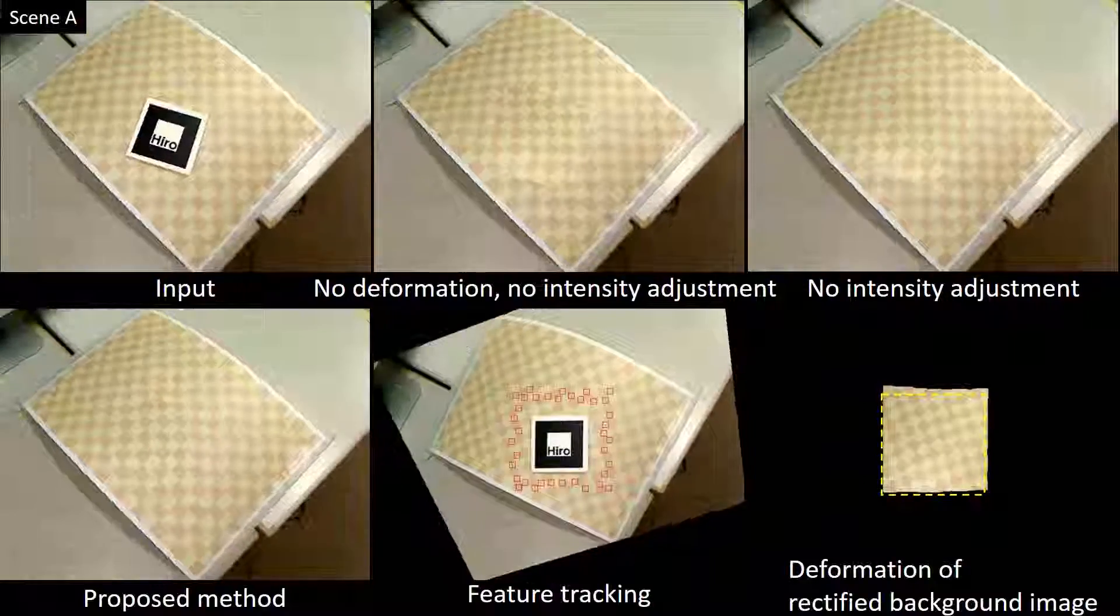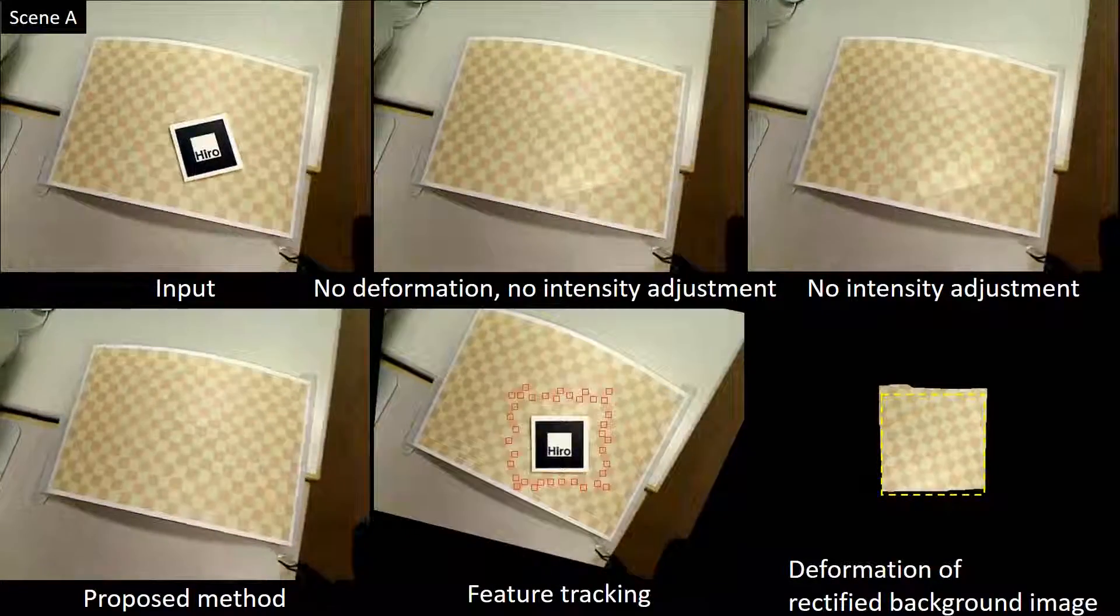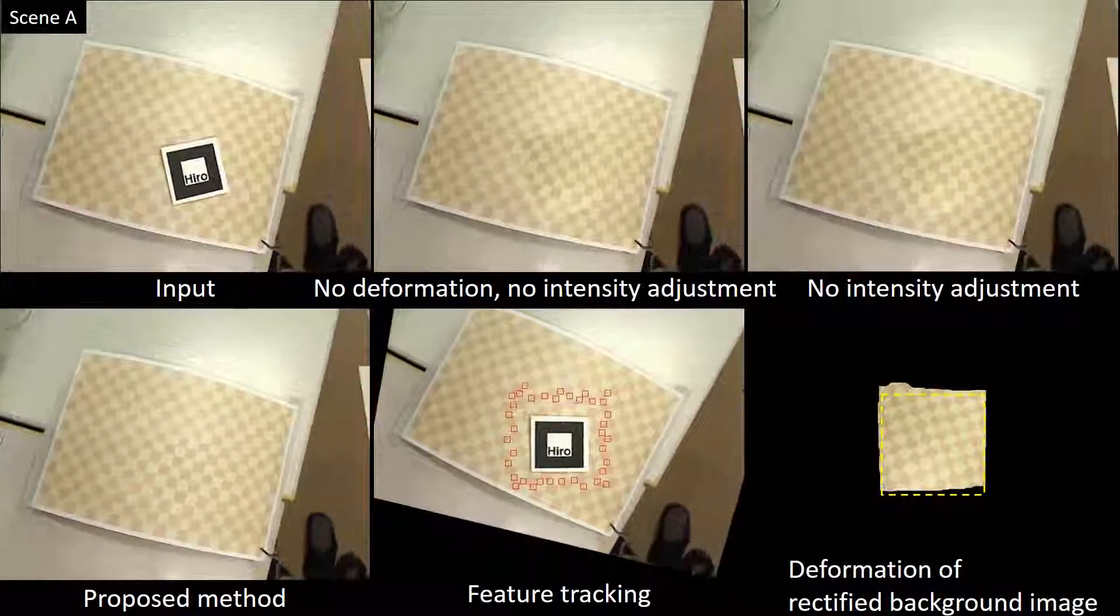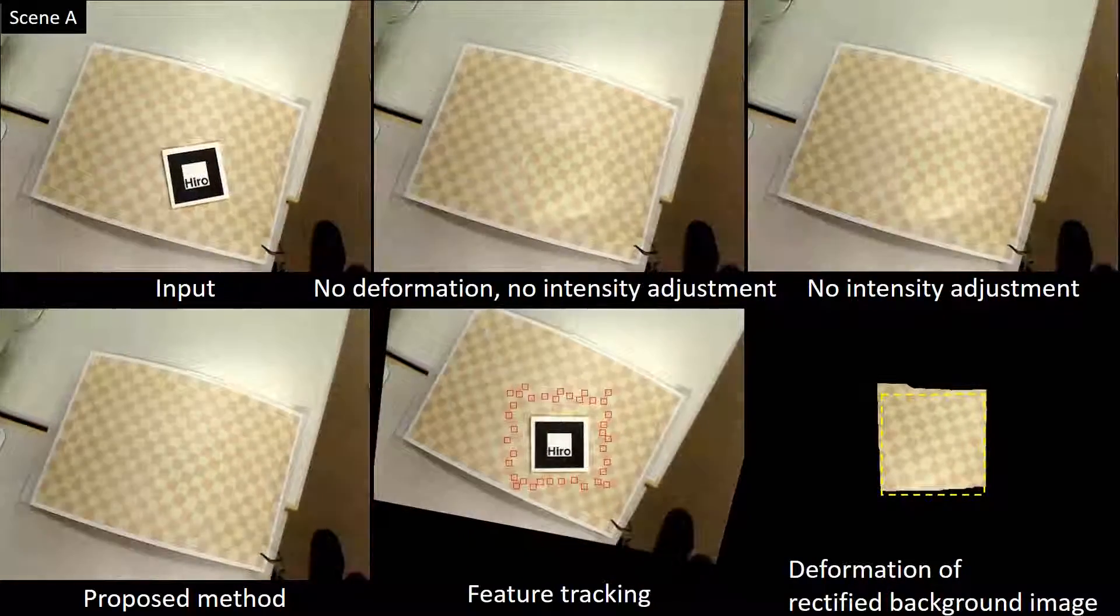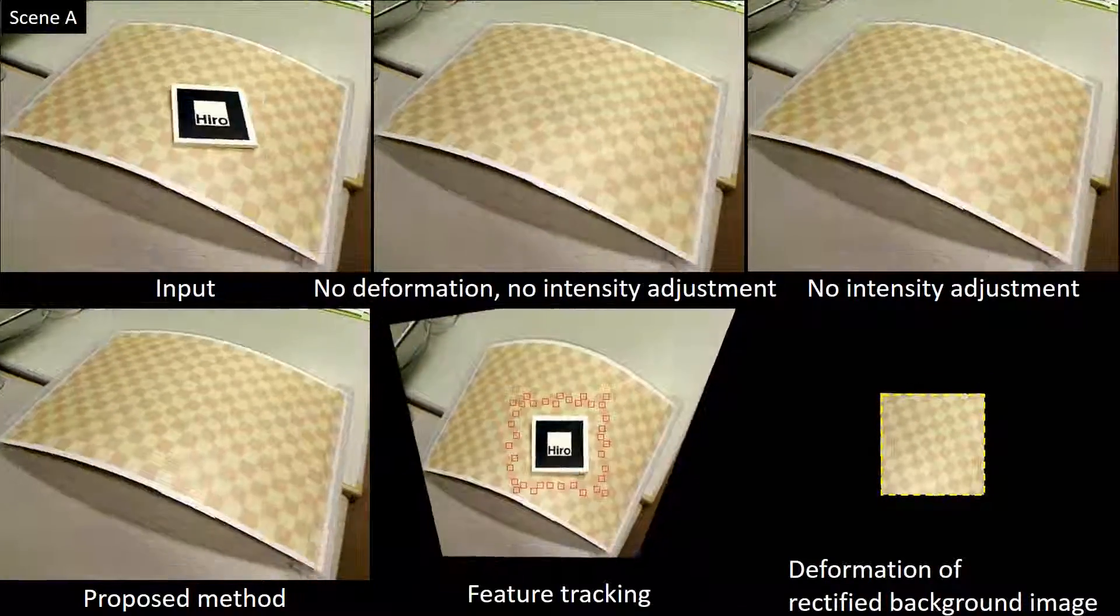On the other hand, with a baseline approach, which only uses homography, significant discontinuities in texture appear around the marker boundary. Without intensity adjustment, the texture is seamlessly connected on the boundary, but the difference in brightness is noticeable.